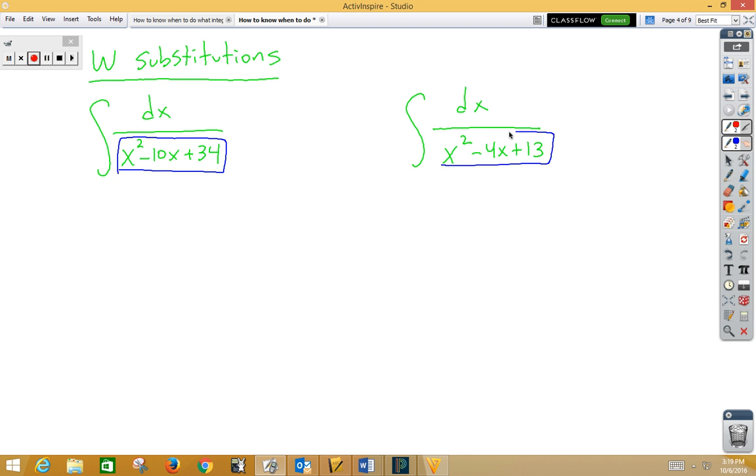Again, here, we could complete the square and do two u substitutions. The big telling point here is that these bottom problems do not factor. If they did factor, it would probably be a BC problem using partial fractions. That is not an AB question.